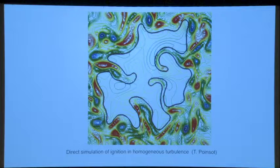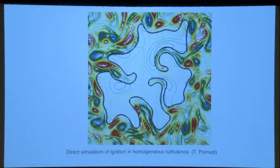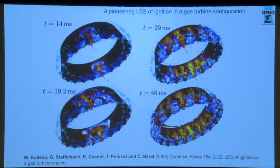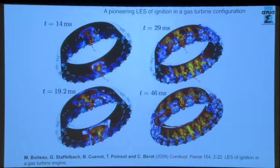DNS ignition studies were done in the late eighties by Thierry Poinceau — starting from a point and getting ignition in turbulence, producing a highly distorted surface. This is the calculation done by Mathieu Boileau: a full combustor being ignited, including two-phase spray and all the complexity of this flow. The problem is you cannot compare it except very crudely with experiments, but in our case we have this combustor where detailed measurements and calculations can both be done.